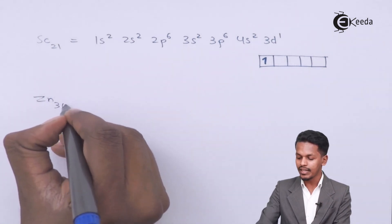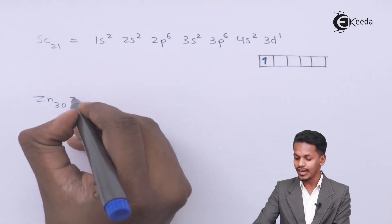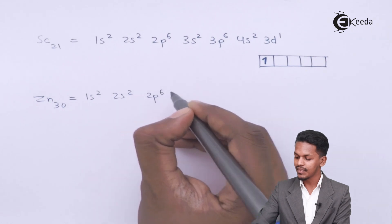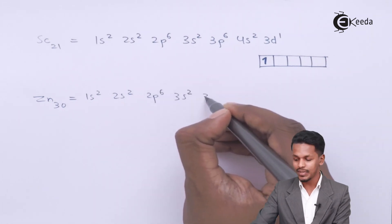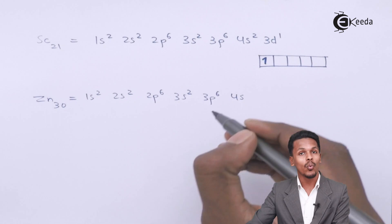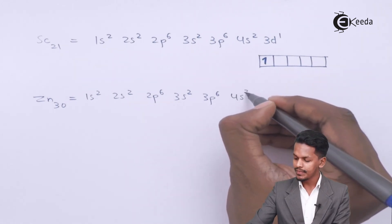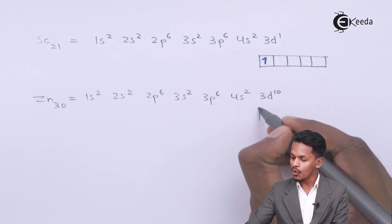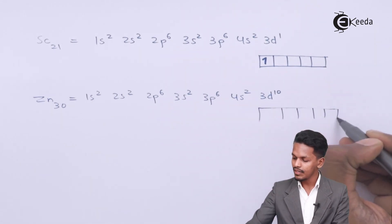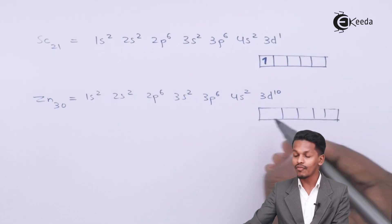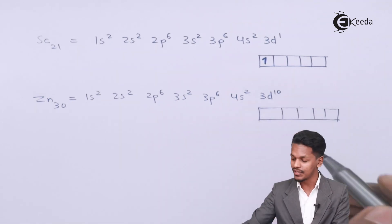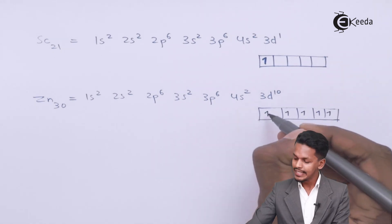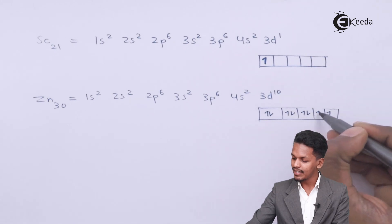Now let's look at zinc, which has atomic number 30. Its electronic configuration is: 1s2 2s2 2p6 3s2 3p6 4s2 3d10. The d sub-shell has five orbitals and contains all 10 electrons.